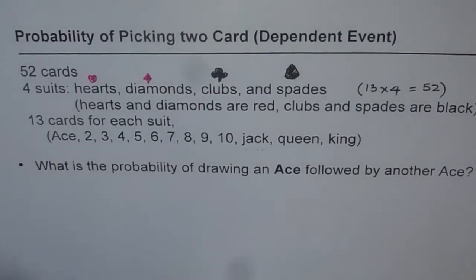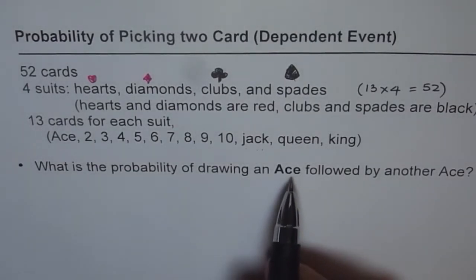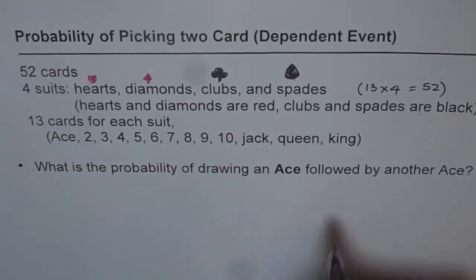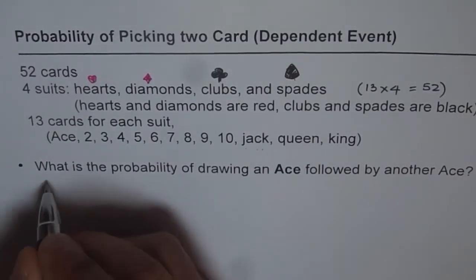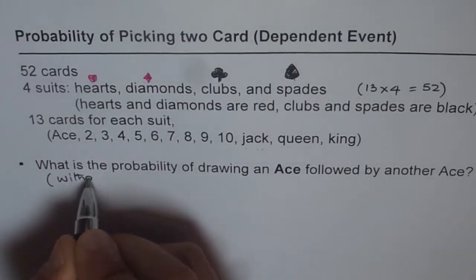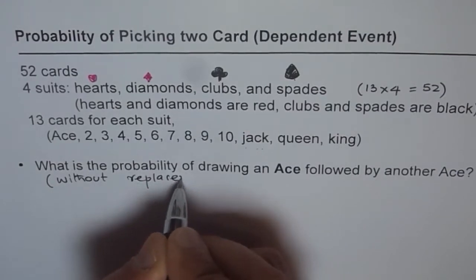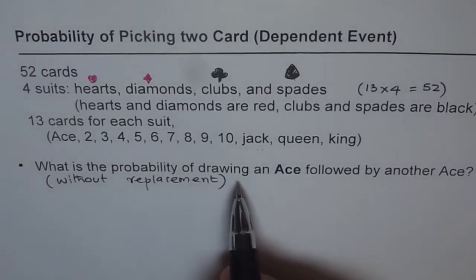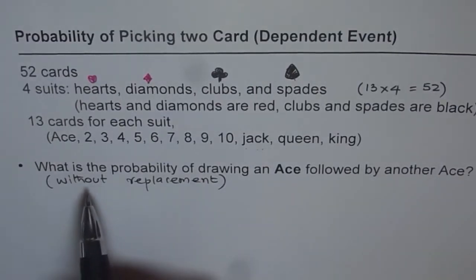Here is the question for us: What is the probability of drawing an ace followed by another ace? We are drawing 2 cards, 1 at a time. Once you draw a card, you do not replace it — so let me add the word: without replacement. What is the probability of drawing an ace followed by another ace without replacement?